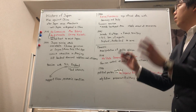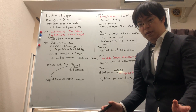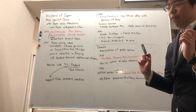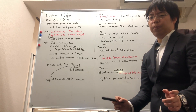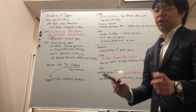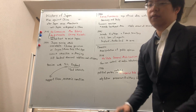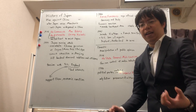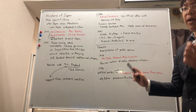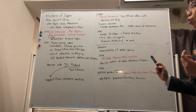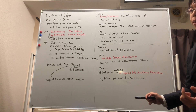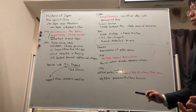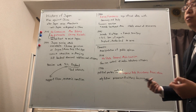In 1941, Japan invaded Vietnam, which was French territory at the time. Because of that, the US banned its oil exports to Japan. England and the Netherlands did the same.